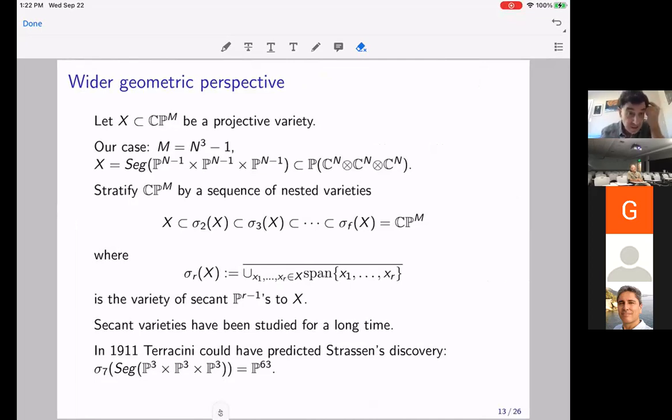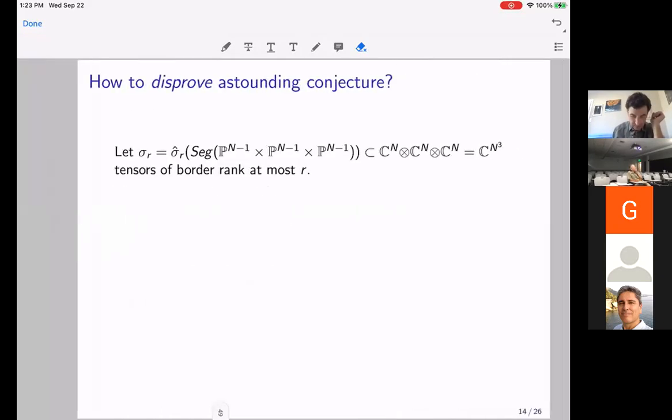So I'm just going to look at any object that's a zero set of a collection of homogeneous polynomials. Those are called projective varieties. Now, these things have been studied for a really long time. And in particular, had anyone asked him, in 1911, Terracini, who worked maybe less than 100 kilometers from Bini, could have told you that any tensor in C4 tensor C4 tensor C4, has border rank at most seven, which would have predicted Strassen's discovery in 1911. He has his famous Terracini lemma, which enables you to compute dimensions of secant varieties.